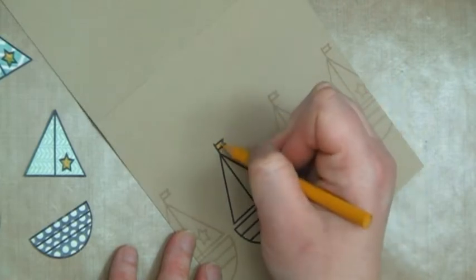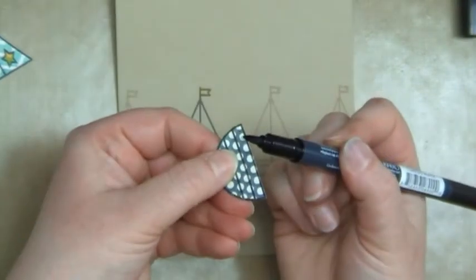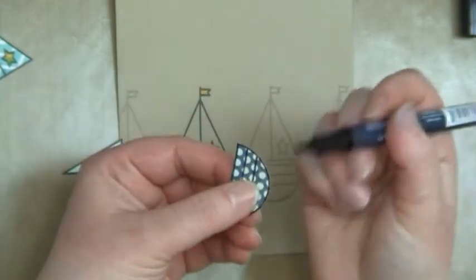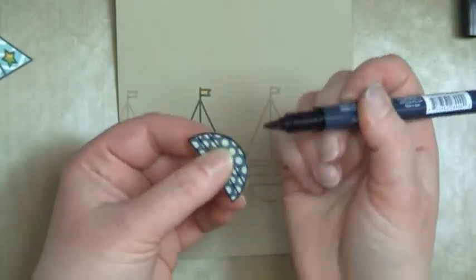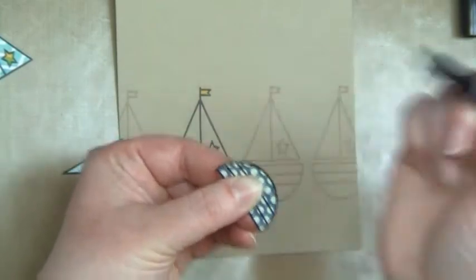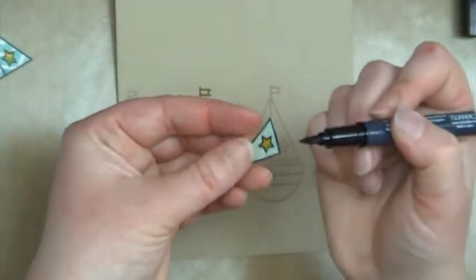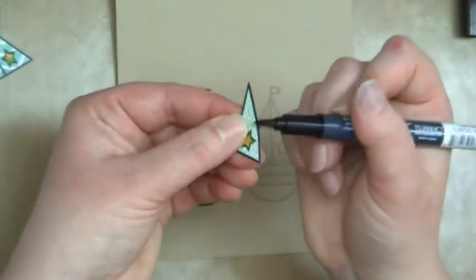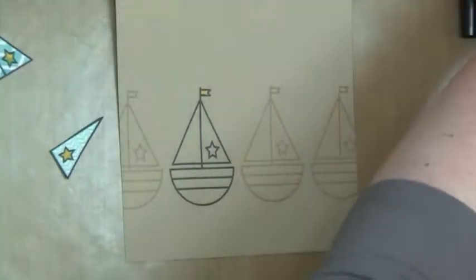Using that same yellow Prismacolor pencil, just coloring in the flag at the top. Now another tip for paper piecing is I get my Memento black pen and I go around the edges of all the pieces, and the reason I do that is just so that you don't have any of the cut portions showing, so it will all stick down nice and neatly.